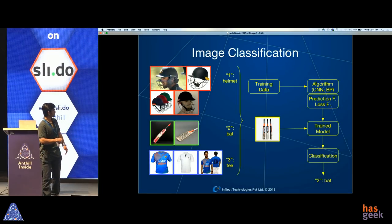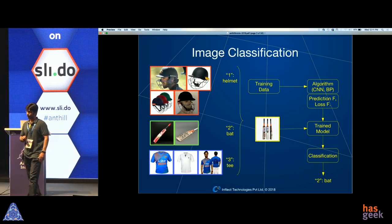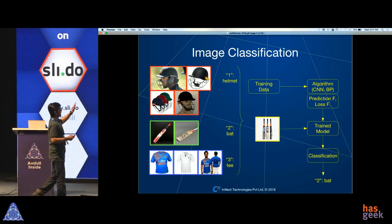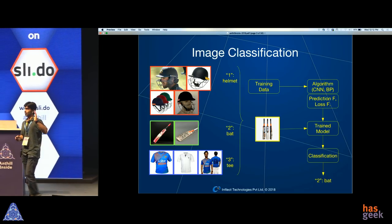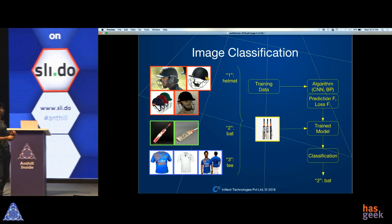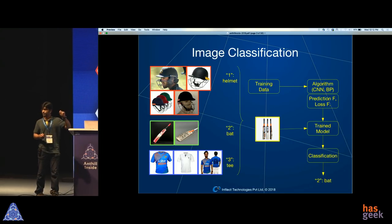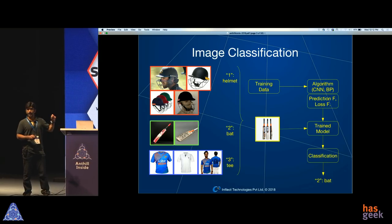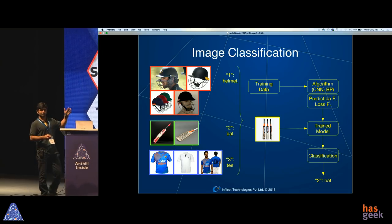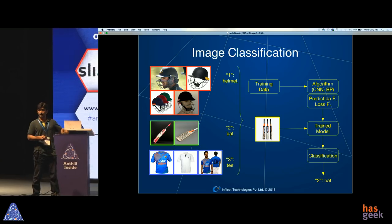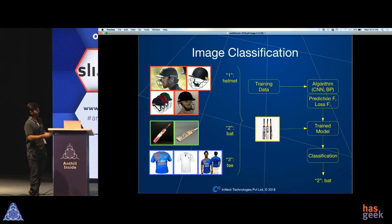Let's start with something most of us are familiar with — image classification. On this slide I have shown a few examples of pictures: sports equipment, helmet, bat, and tee. Note that these labels exist for the entire image. Given these images and labels, we can apply convolutional networks and the backpropagation algorithm, and then build a classifier that at runtime can take an image as input and do classification.